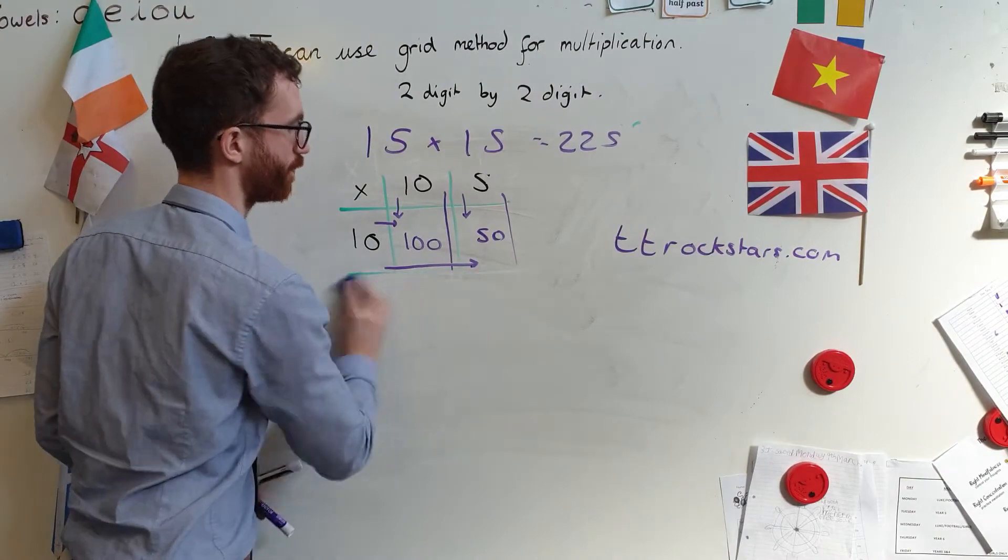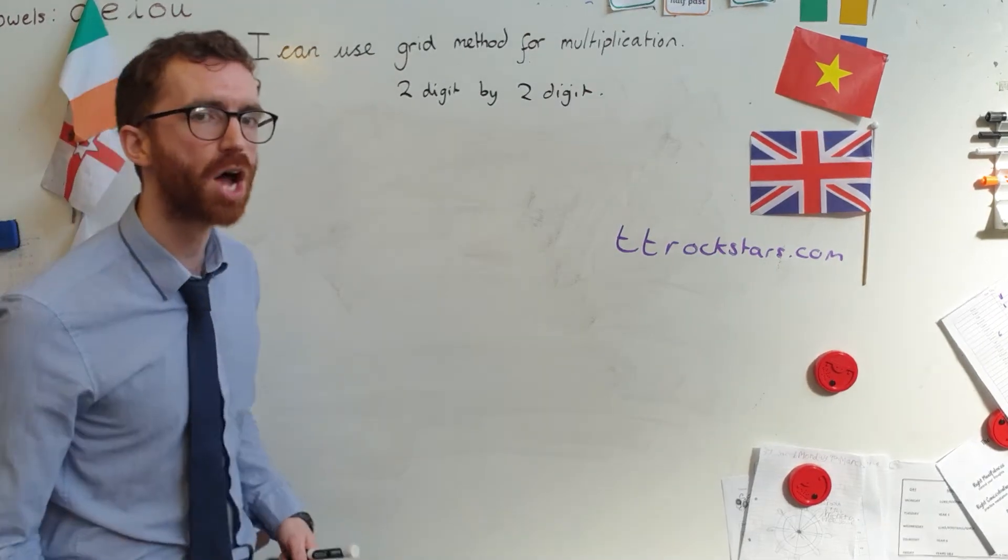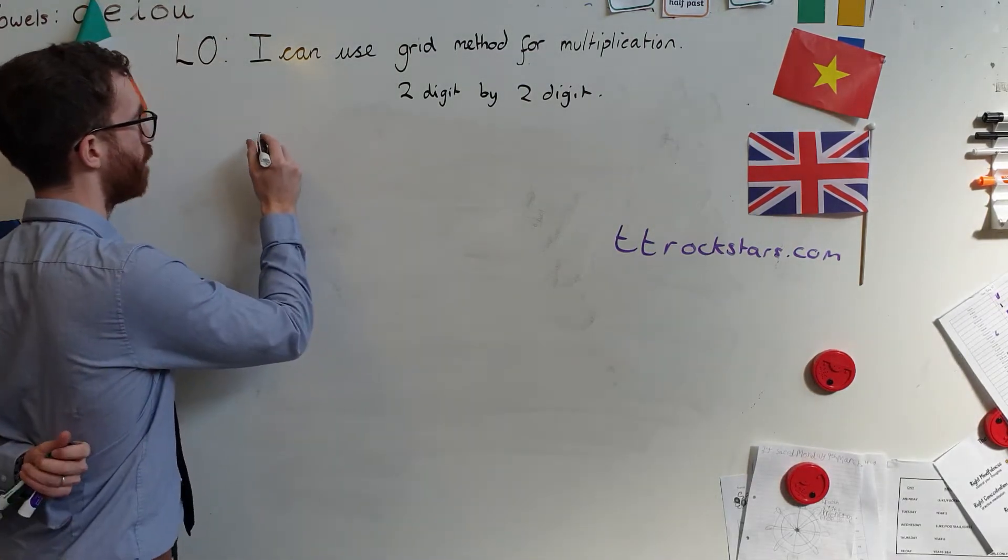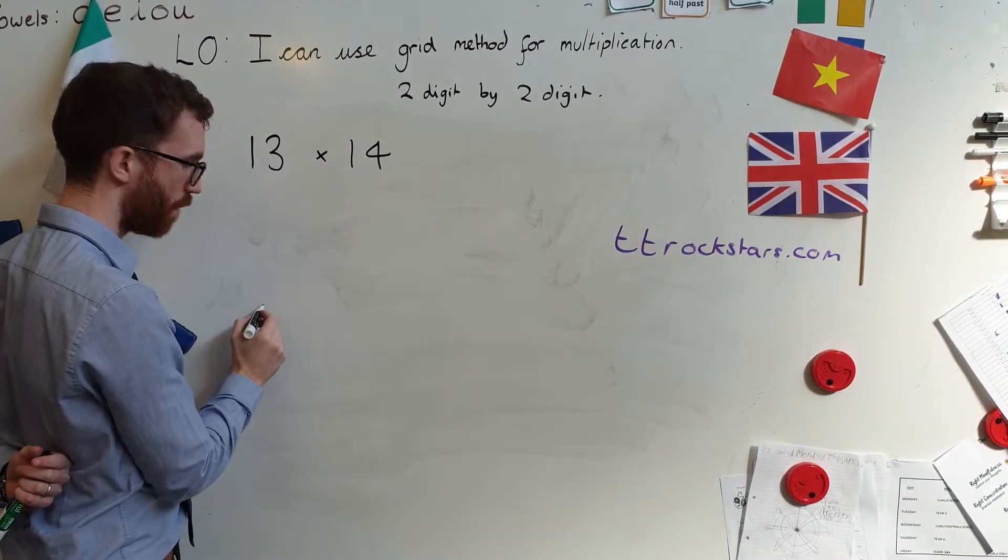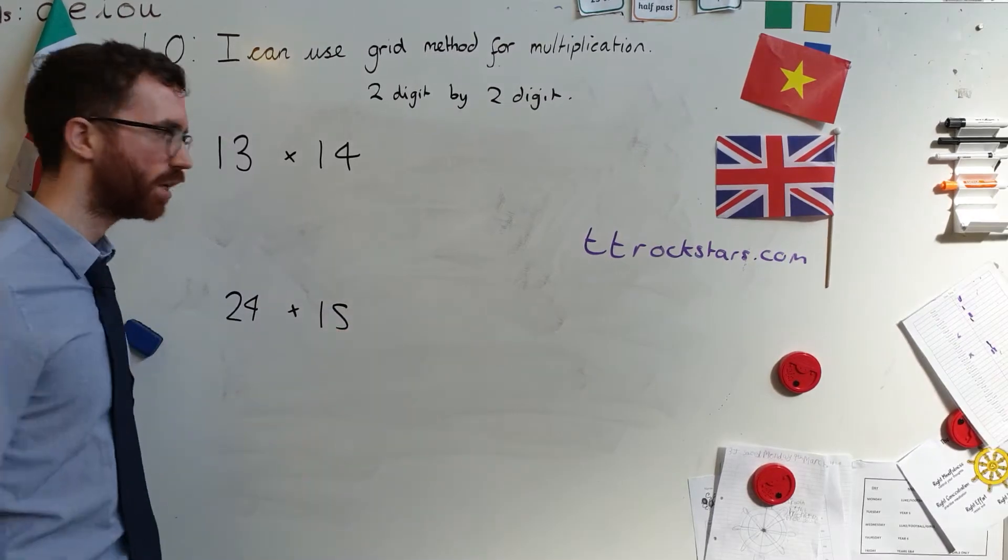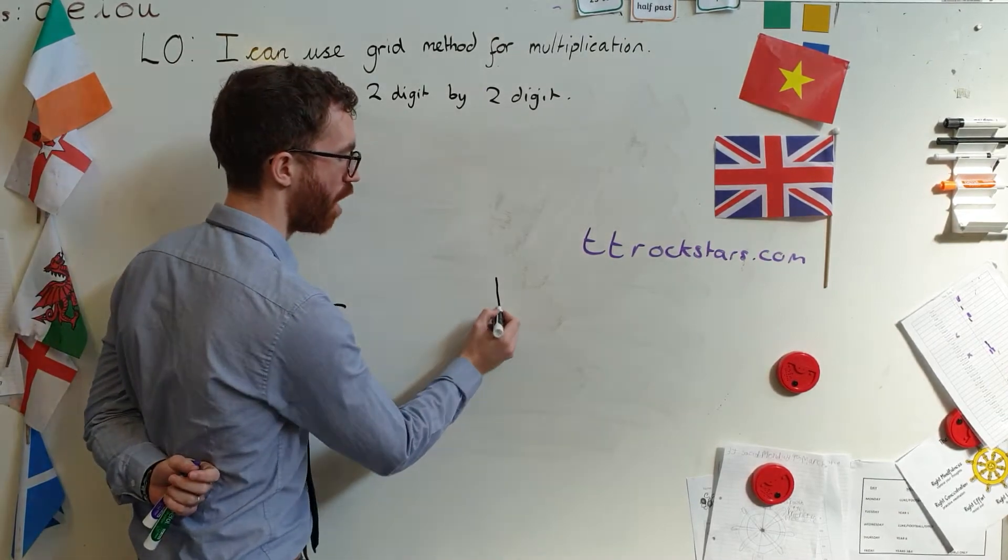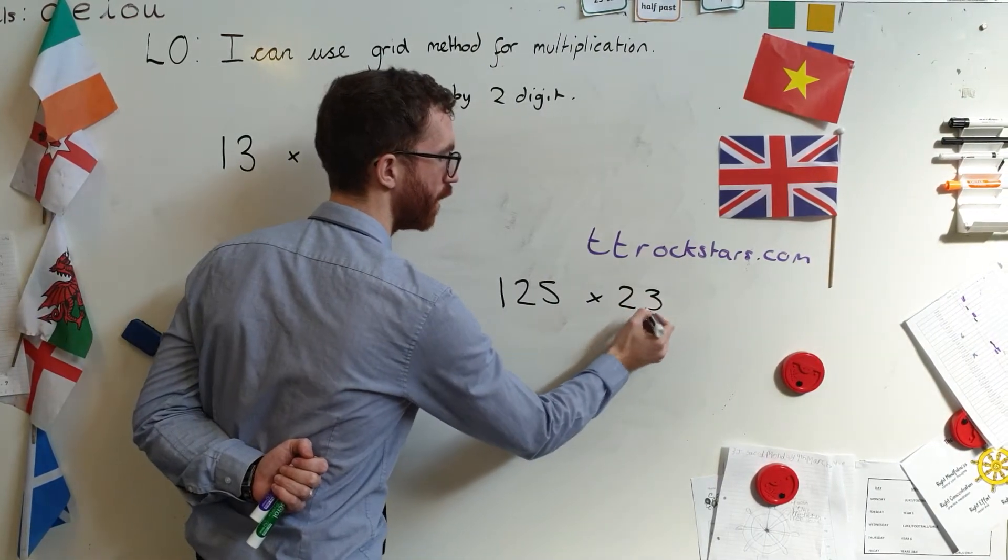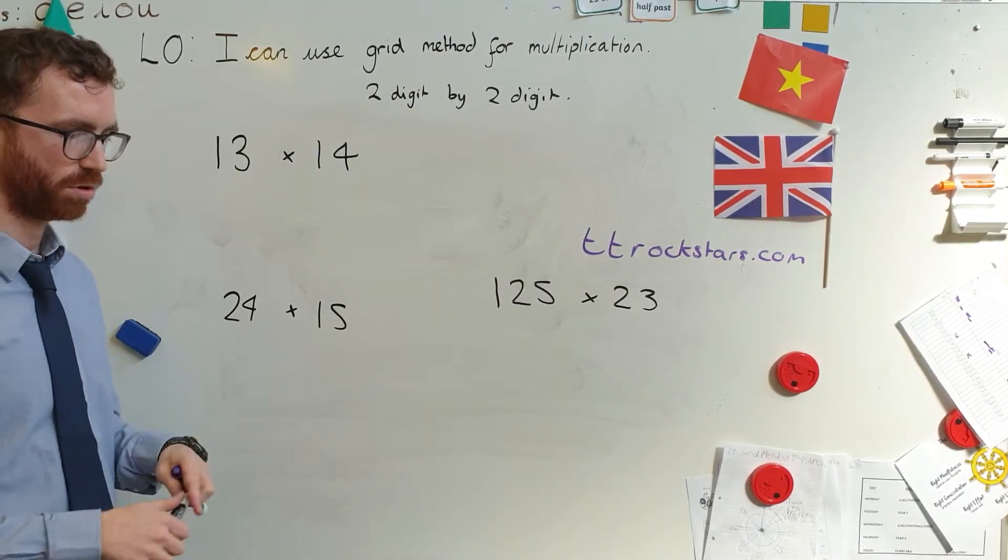It's really easy using the grid method. You can do this even with hundreds. In fact, I might pop an extra one on for you as a little bit of an extra challenge. So, what am I going to do? Let's have... We'll have 13 times 14. Start off nice and simple. And we'll up the game a little bit. We'll have 24 times 15. And then, shall we end on quite a tricky one? Let's have a big 100, shall we? Let's have 125 times... Oh, I don't know. 23, there we go. Just to show you that it is really, really easy. Three questions for you to do. Off you go. Pause.